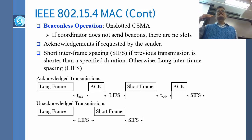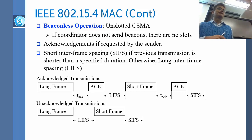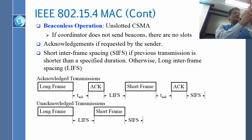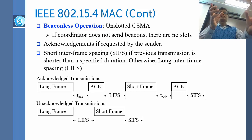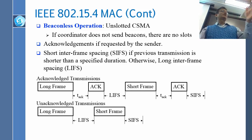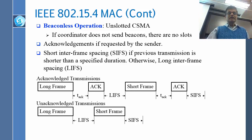At standards meetings people say different things, so the standard allows many possibilities and every possibility is accepted. There is a beacon-less operation as well, and beacon-less operation uses unslotted CSMA-CA. Slotted means you synchronize time and the slot starts; if you don't transmit in that slot you go to the next one. Unslotted means continuous time — no particular instance is better than another. CSMA means you do the carrier sense and random access from that point.